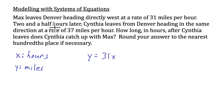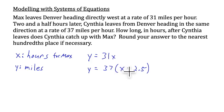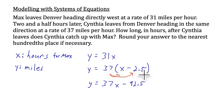Cynthia leaves two and a half hours later, so her distance equals her speed multiplied by x minus 2.5, since x represents Max's hours. Distributing the 37, Cynthia's equation becomes y equals 37x minus 92.5, since 37 times 2.5 equals 92.5. Now we have two equations that both say y equals.